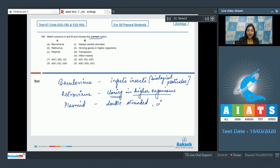And your transposons, these transposons are jumping genes. Thus A matches with four, retroviruses are used for cloning in high organisms, so B matches with two, and plasmid is always double stranded, so C matches with one. The correct answer becomes option number one.